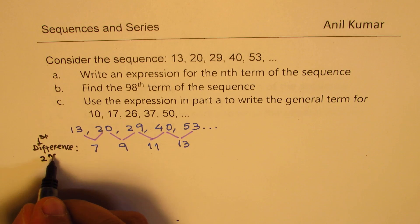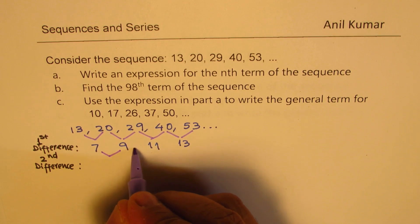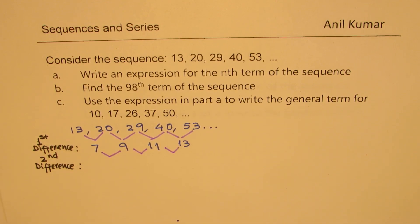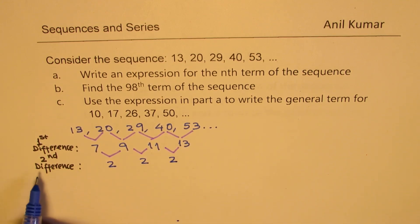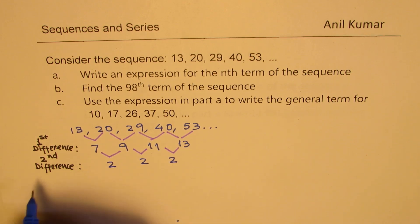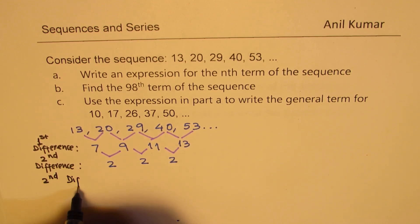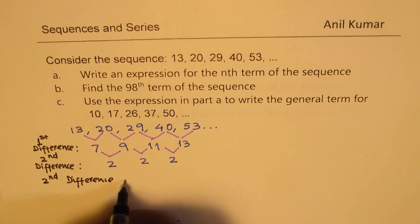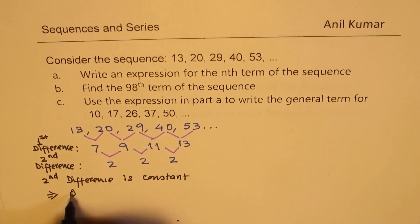Now let's find the second difference. We compute 9 minus 7, 11 minus 9, and 13 minus 11. We get 2, 2, 2, and 2. So the second difference is constant, and that means it's a quadratic relation.